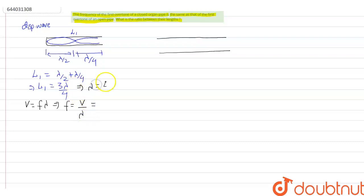This implies frequency will be equal to wave speed upon wavelength. You can find the value of wavelength from here. The wavelength will be 4L1 upon 3. So the frequency in this case will be equal to wave speed upon wavelength, that is 4L1 by 3, so it will be equal to 3V upon 4L1.